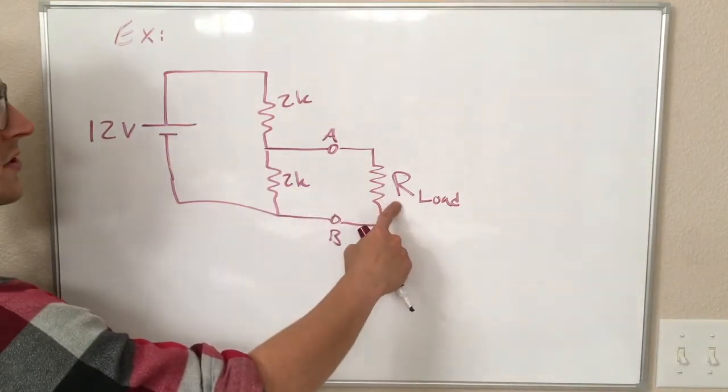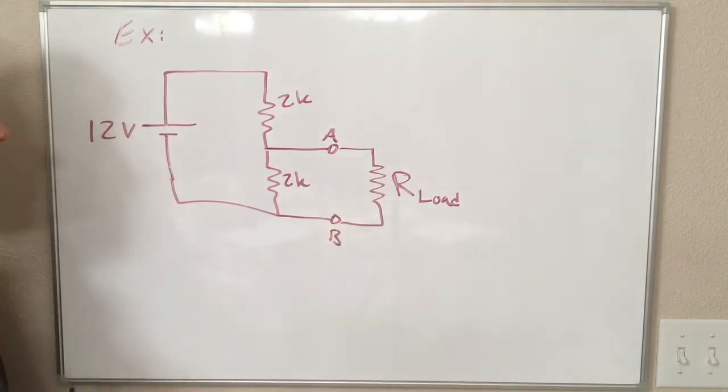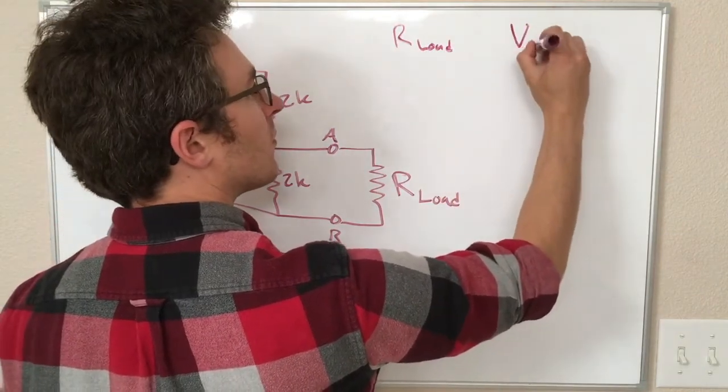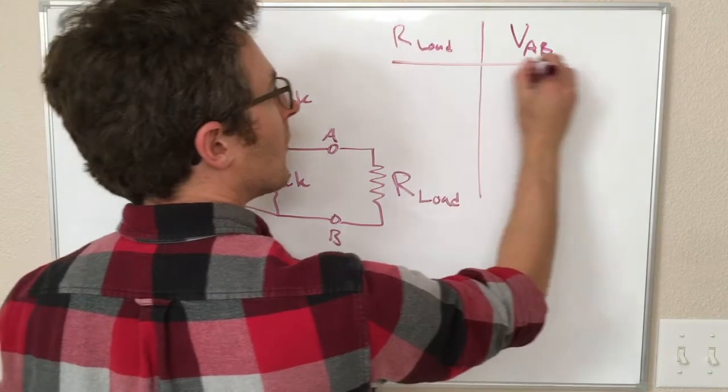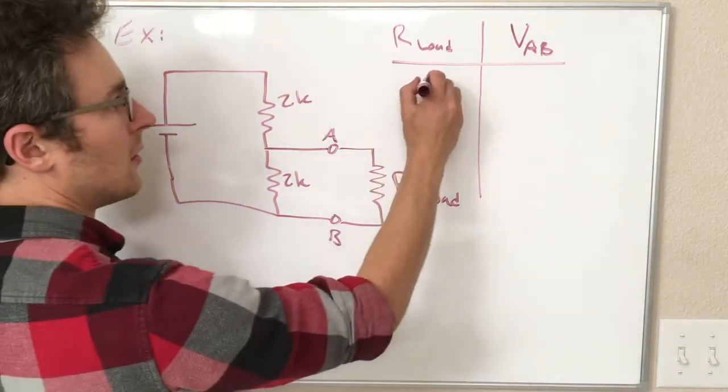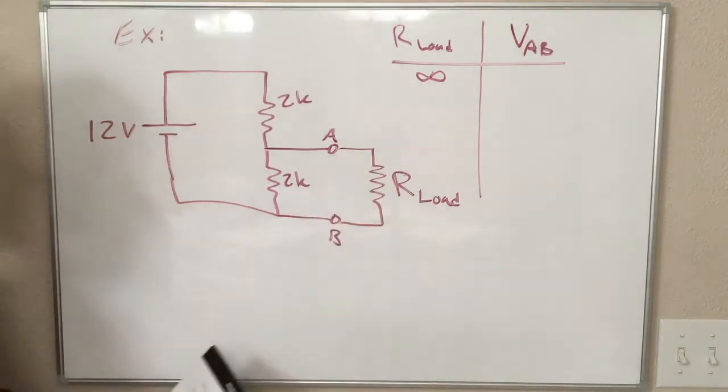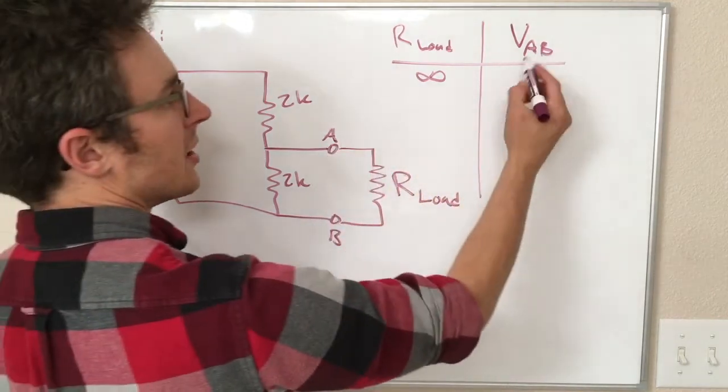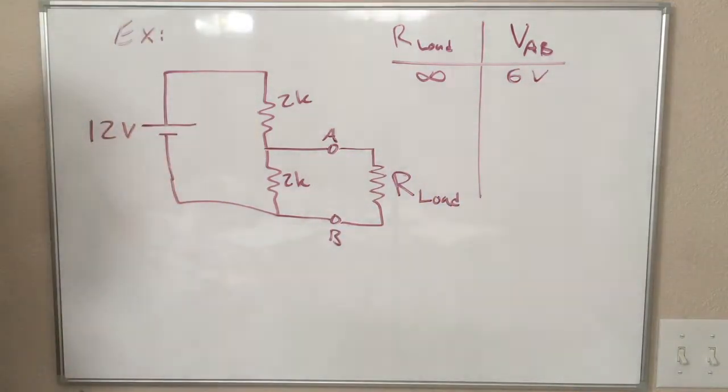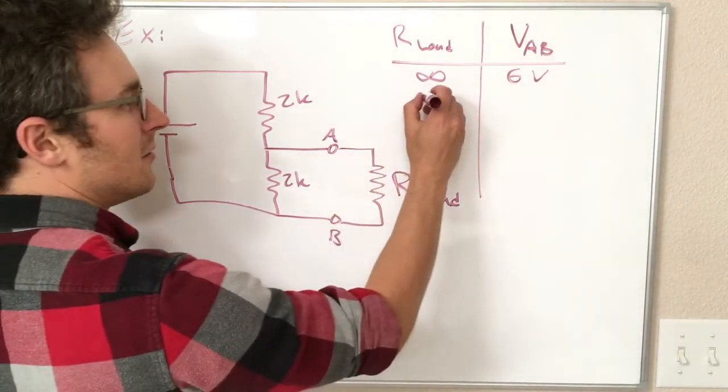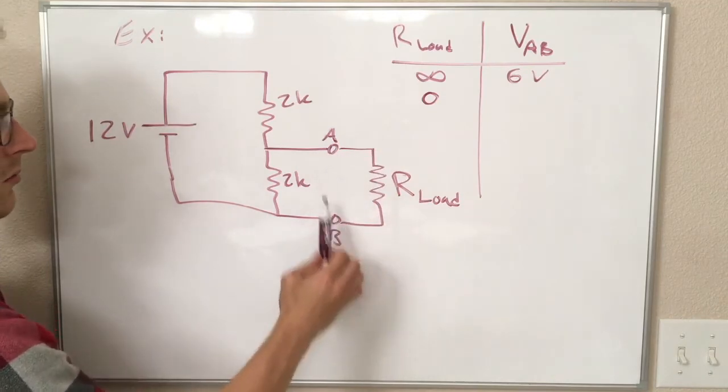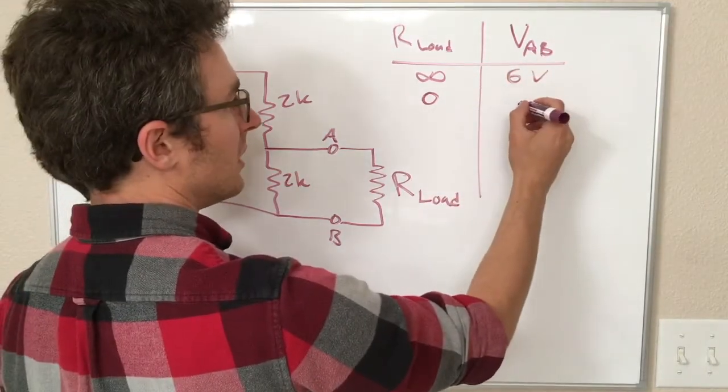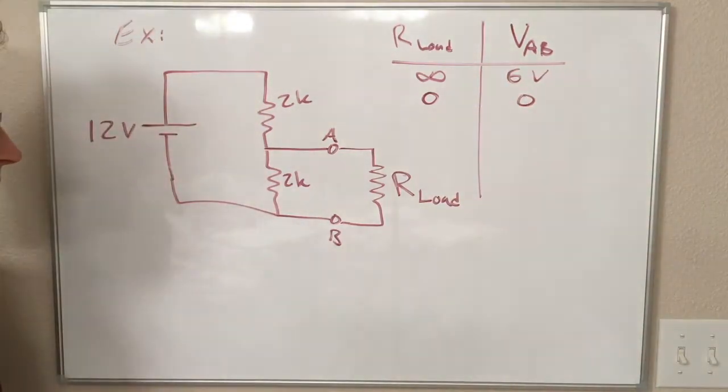So for different values of the load resistance, we're going to feel different voltages between points A and B. Some of these are really easy to see. For example, if the load resistance is infinite, meaning that we have an open circuit here, our circuit is just this simple voltage divider, and the voltage between points A and B is our same 6 volts. If we make this load resistance 0, meaning we replace it with a wire, then that is forcing points A and B to be at the same potential. We're shorting that out, and the voltage between A and B is going to be 0 as well.